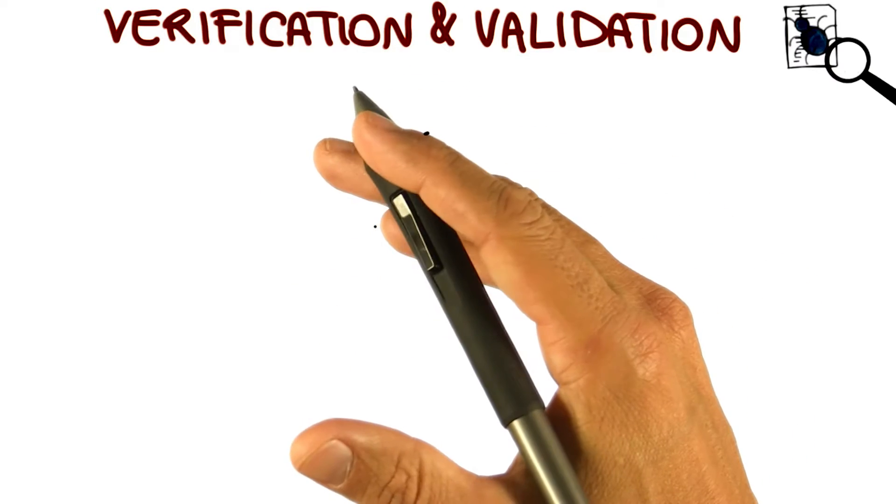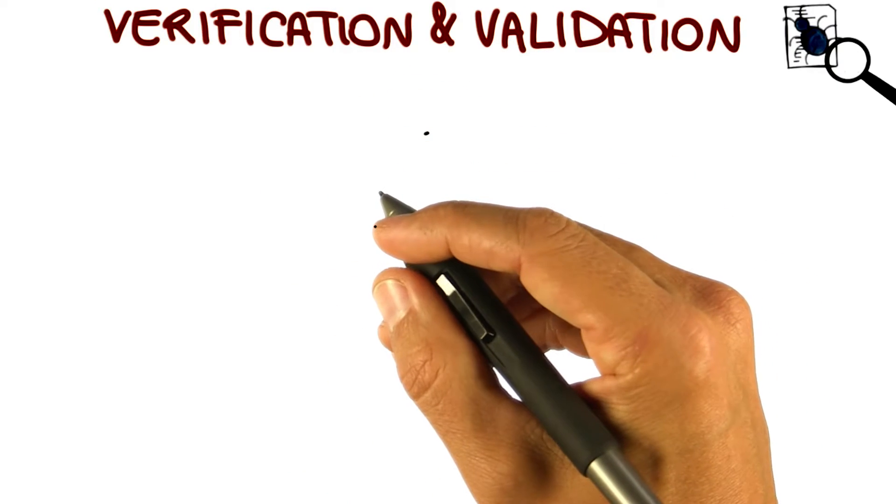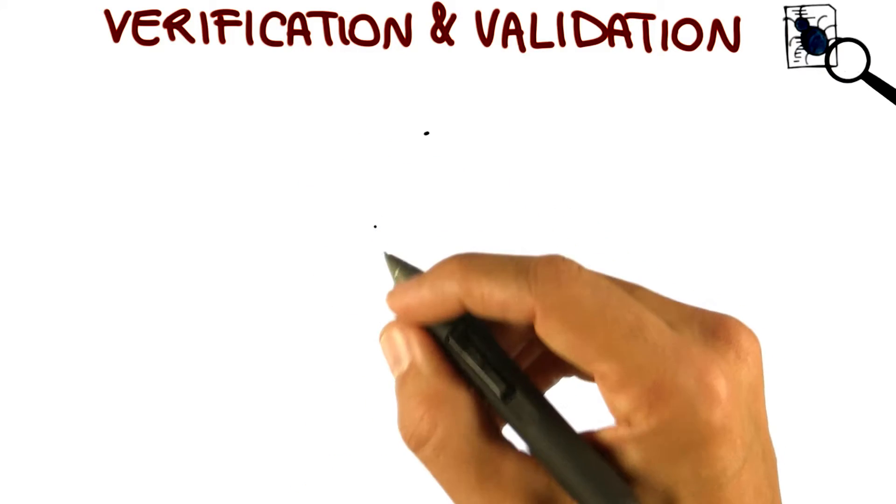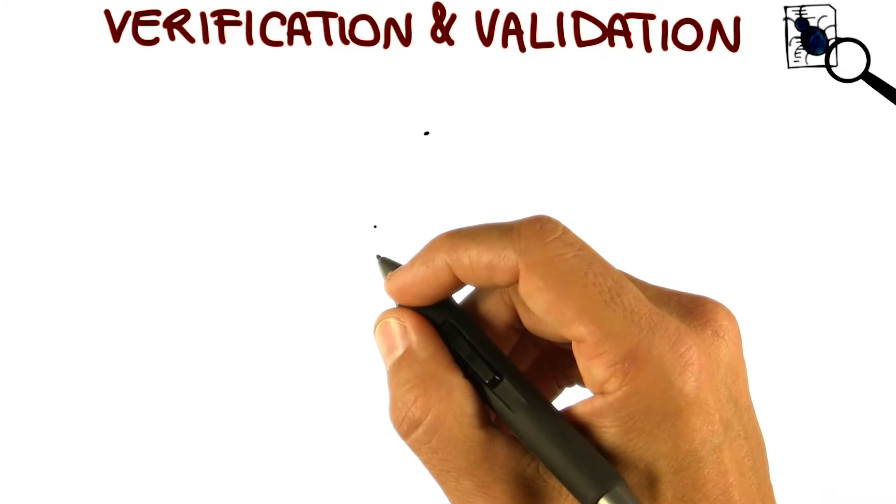After we have built our system, verification and validation is that phase of software development that aims to check that the software system meets its specification and fulfills its intended purpose.